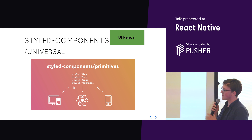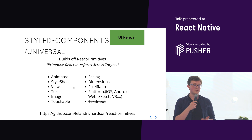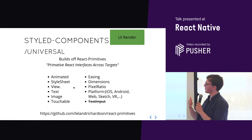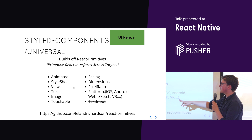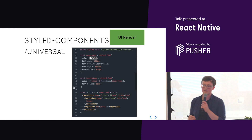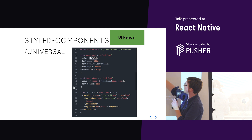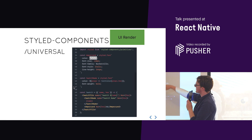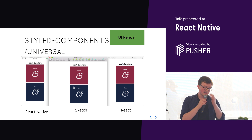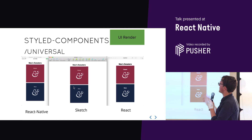There's an experimental branch of Styled Components called Styled Components Universal, or Styled Components Primitive, which allows you to render to React, to Sketch, and to React Native — really cool if you want to integrate with designers. It supports a number of primitives, building off React Primitives. Some things like text inputs are still not supported. From the primitives branch of Styled Components, you can import text components, use them as JSX, and render something that works across React Native, Sketch, and React.